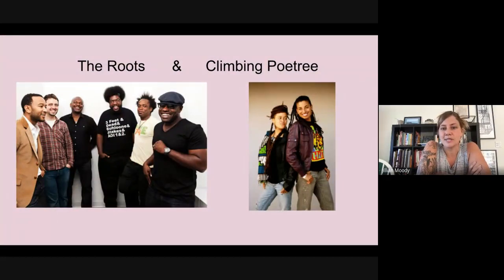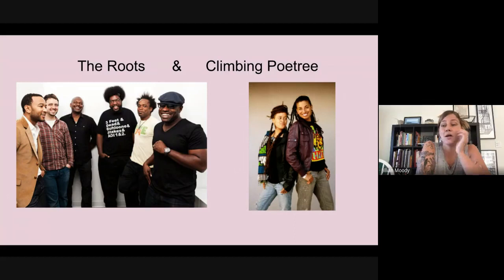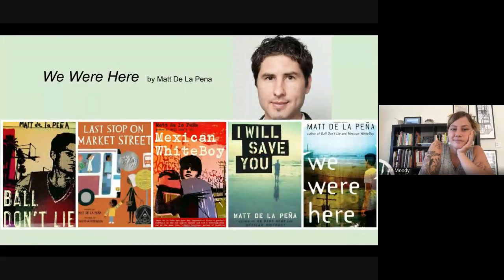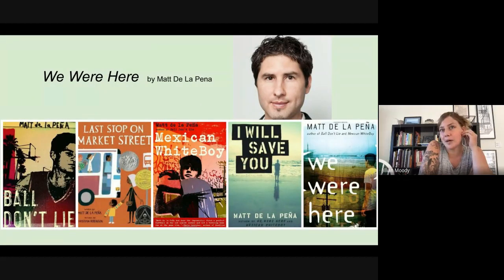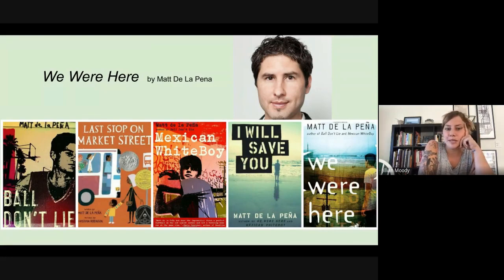The Roots and Climbing Poetry unit is about song lyrics and poetry and social justice. And the We Were Here unit is a book about the criminal justice system and about several boys that go on kind of a road trip. I'm not going to tell you the secret of the book, but it's good.